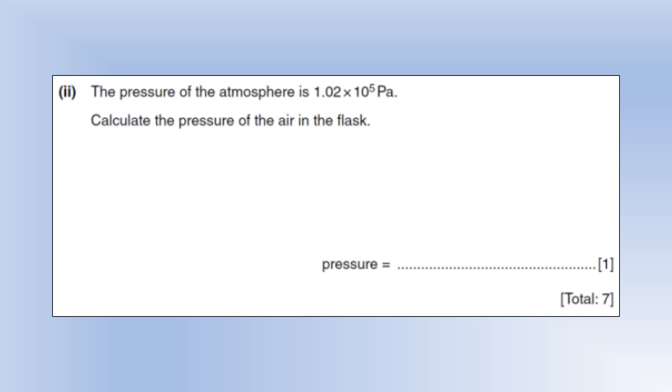So now I want us to calculate the pressure of the air in the flask. So the reason the mercury goes up is to increase the pressure so that the pressure is balanced out. So the pressure from the mercury plus the pressure from the gas in the flask is going to be equal to atmospheric pressure. That's why the liquid has moved to make that happen. So if we subtract the mercury pressure from the atmospheric pressure, that should tell us what the pressure inside the flask is. And that gives us 6.8 times 10 to the 4 pascals.